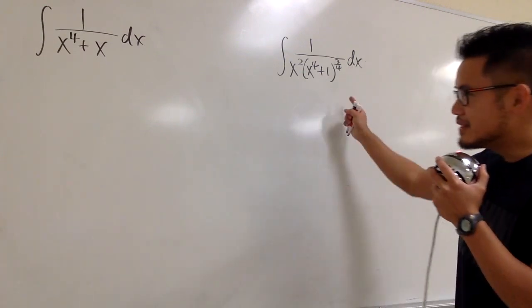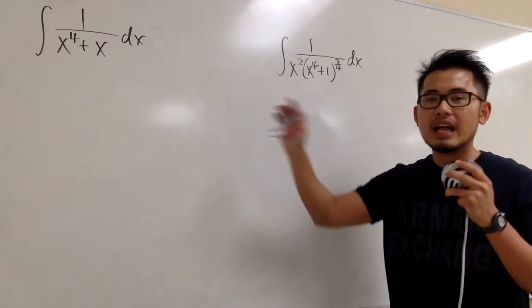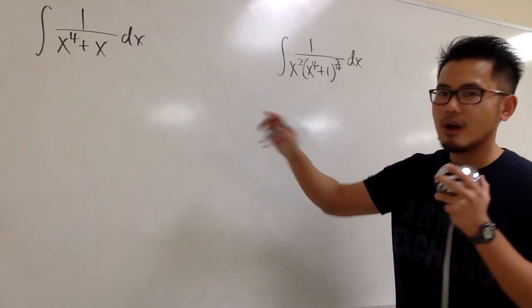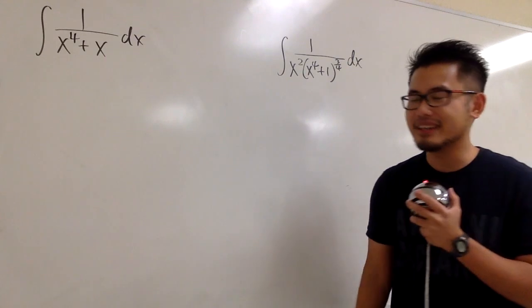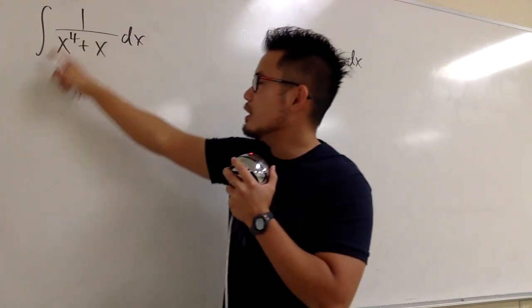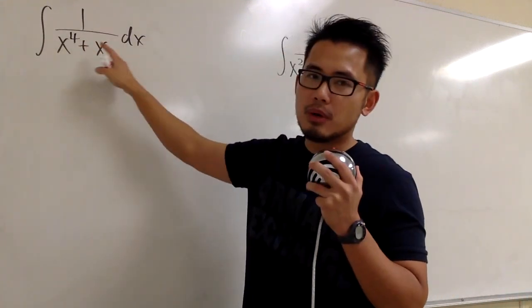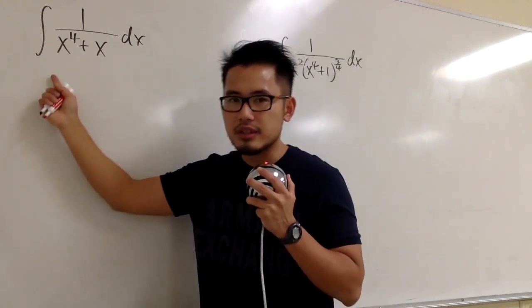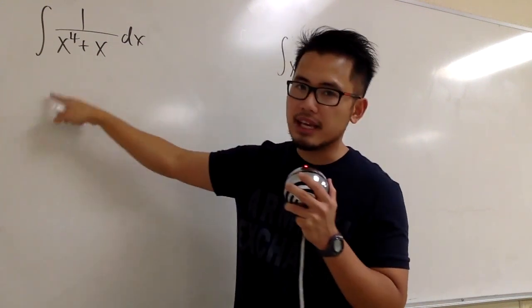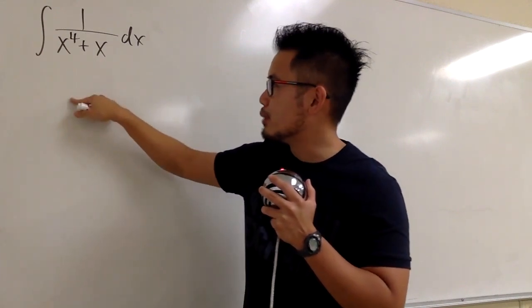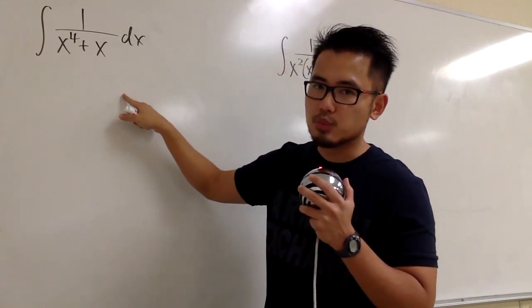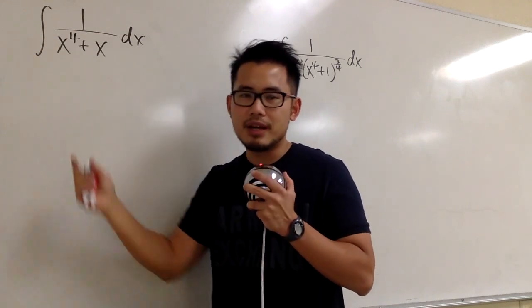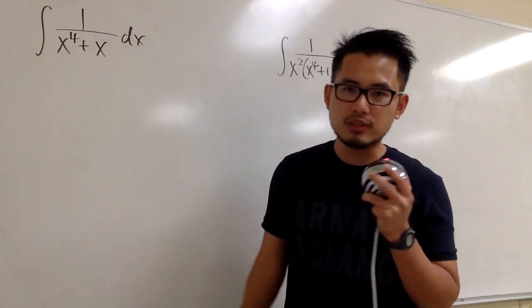So even though these two integrals look completely different, the method we are going to use is very similar. Let's look at the first one: the integral of 1 over x to the fourth power plus x. The usual strategy is to factor the denominator — factor out an x, giving x times the quantity x cubed plus 1 — and then factor x cubed plus 1 further and do partial fractions after that.